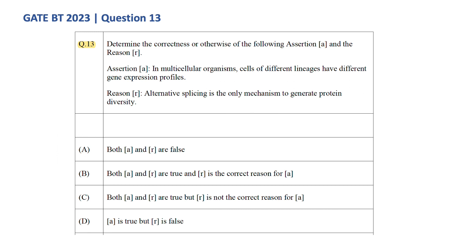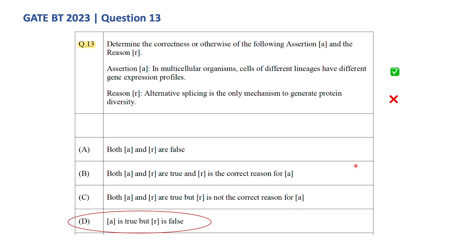Coming back to the question: in multicellular organisms, cells of different lineages have different gene expression profiles — this statement is true. Now, the reason: alternative splicing is the only mechanism to generate protein diversity — this statement is false, because there are many mechanisms that generate protein diversity, and alternative splicing is just one of them. Even if the reason were true, it would not be the correct reason for the given assertion. Therefore, the answer is Option D: A is true but R is false.